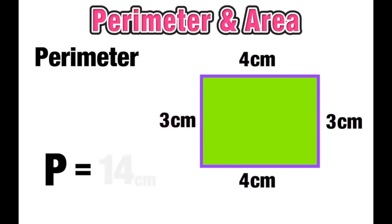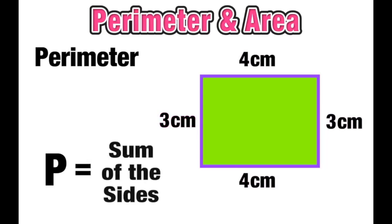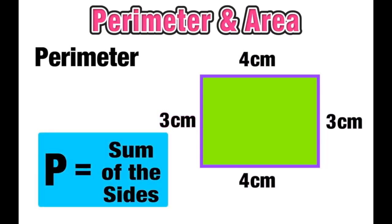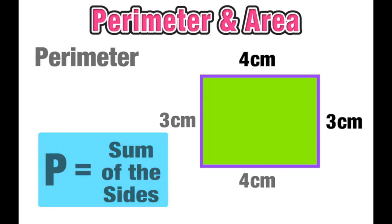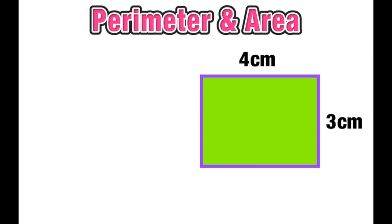The cool thing is that this works for any rectangle. We can say that the perimeter of any rectangular figure is equal to the sum of all the sides. All that means is you take all the sides and add them up.